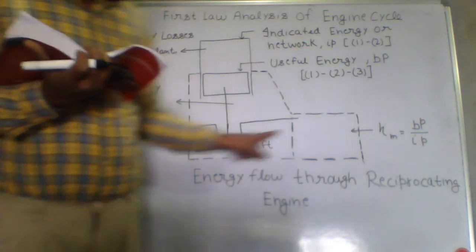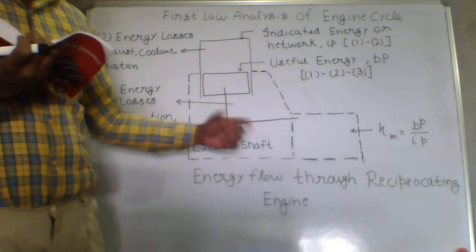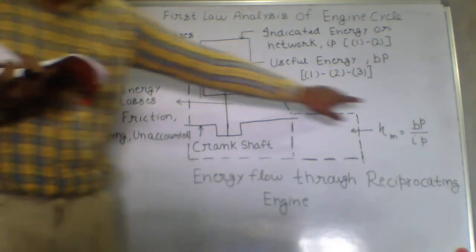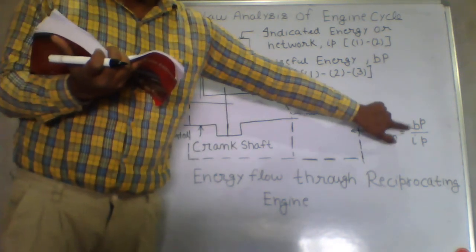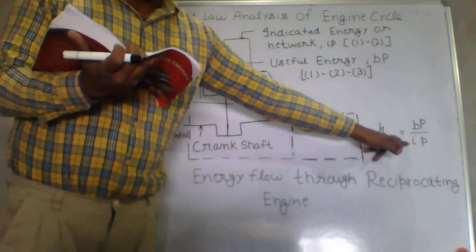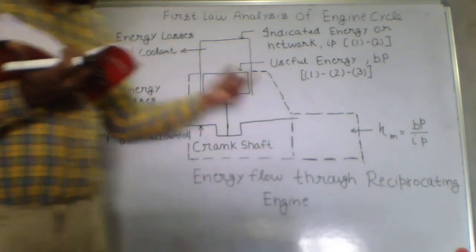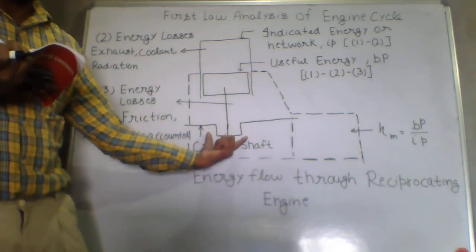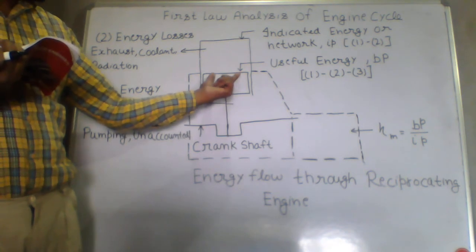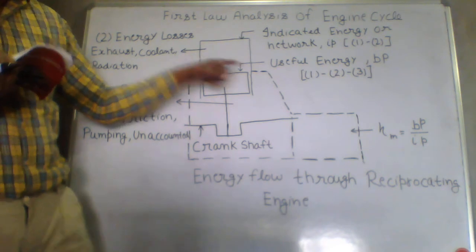Whatever power we are getting at the crankshaft is called brake power. Whatever power we will get here at the crankshaft, which is the actual output, is called brake power. The ratio of brake power to indicated power is called mechanical efficiency.